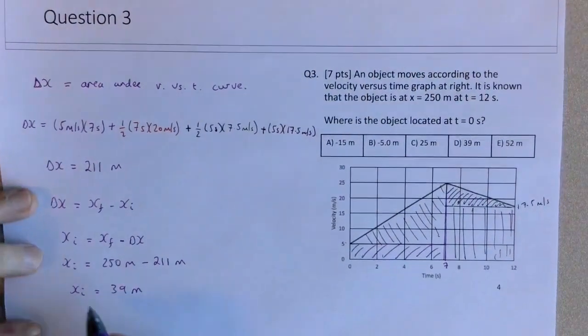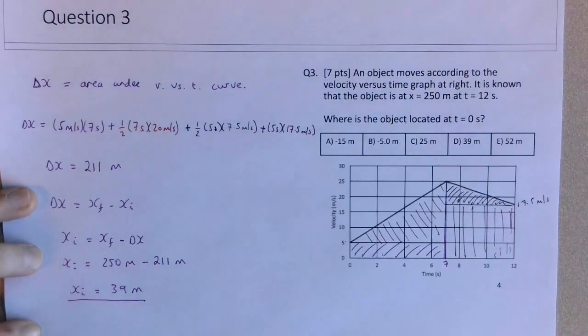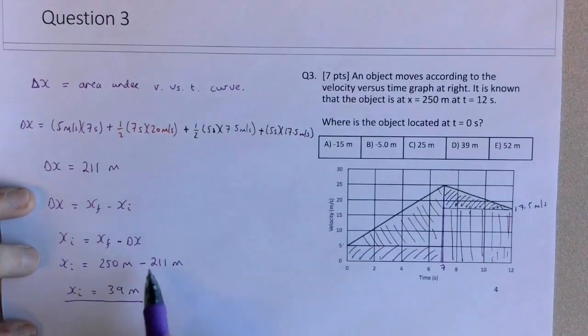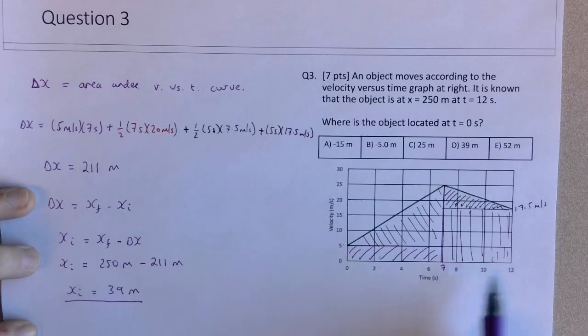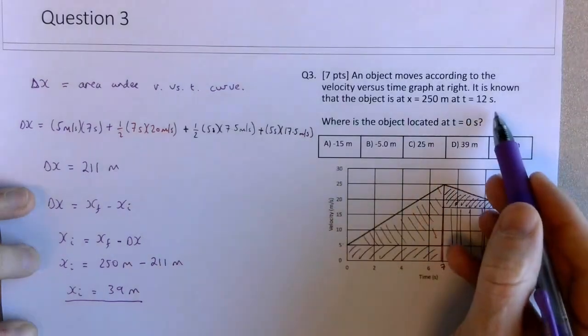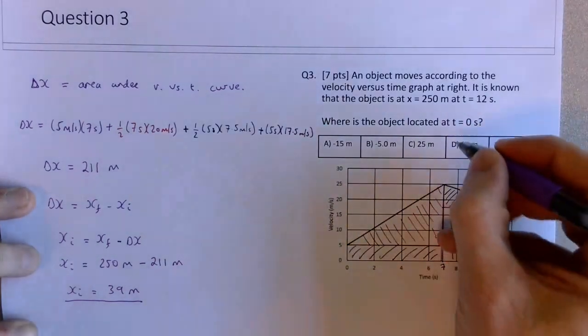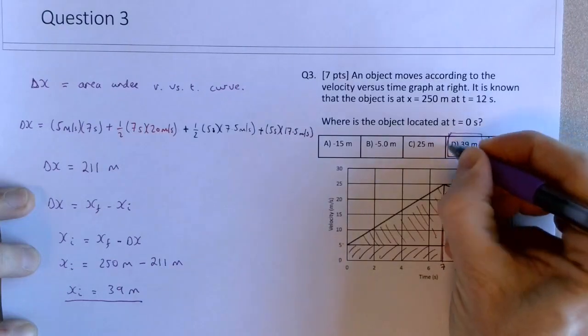So if the object were to start, which it does, at 39 meters at t equals 0 seconds, we know it travels 211 meters between 0 and 12. So then it would have to be at 250 meters at 12 seconds, which is what's stated in the question. So 39 meters, choice D, that's the correct answer.